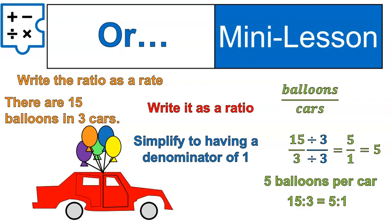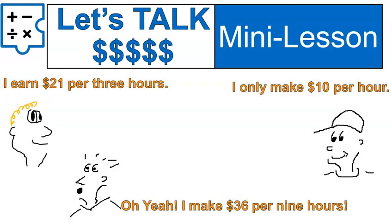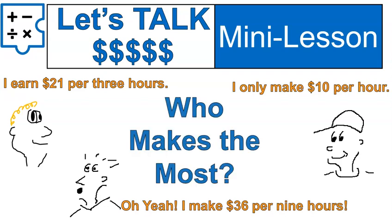A unit rate means that there is a 1 in the denominator — 5 over 1. We usually don't even write that denominator of 1. We would just say 5 balloons per car. So this is sort of a different way to think of it, but it means the same thing. You're calculating the number of balloons per every single car.